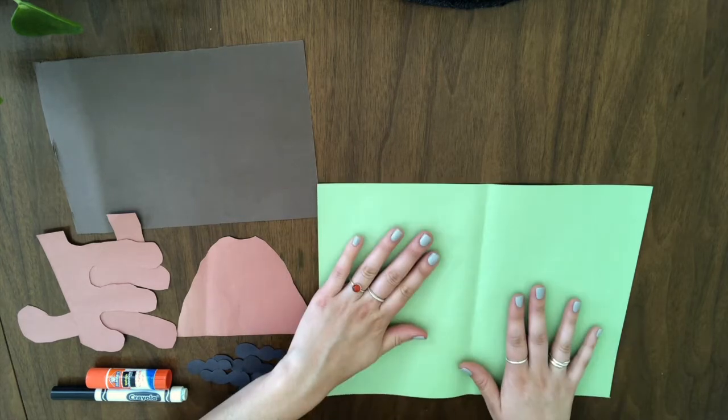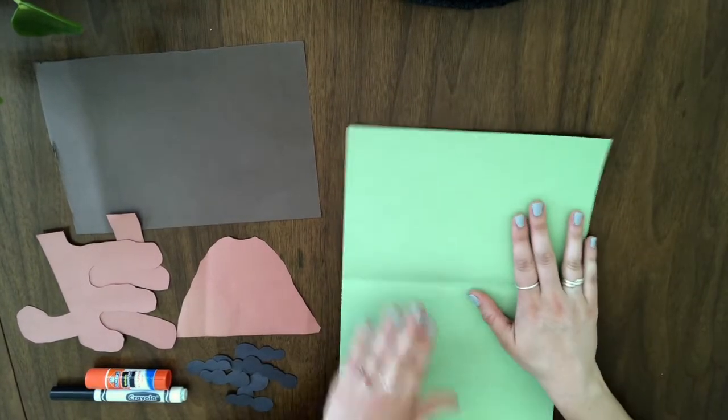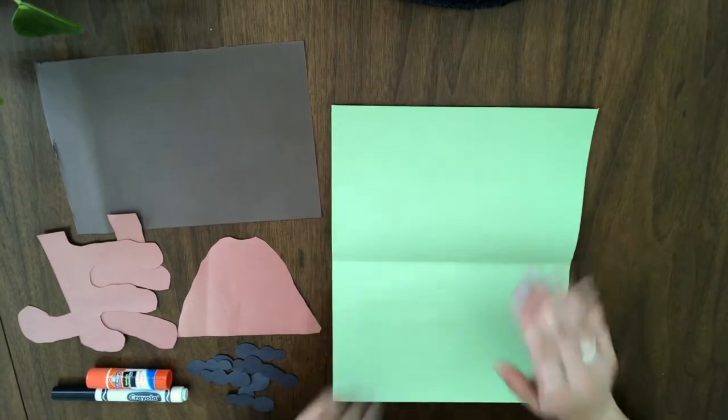So you're gonna take your main sheet of paper and you're gonna turn it long ways, so it's facing you up and down. So you can see here.